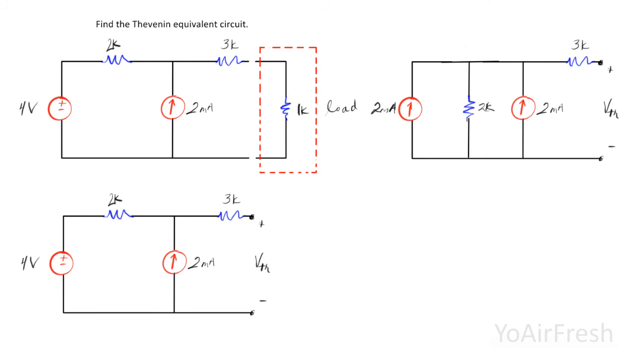And then after this, the next step would be to combine these two current sources. So you can actually just take this one out here. I would just redraw the circuit, but I'm running out of room here.